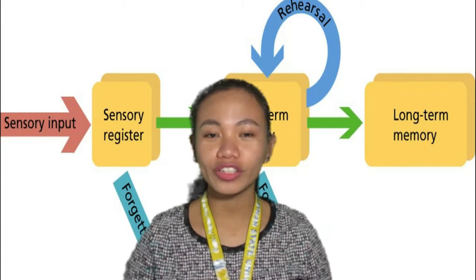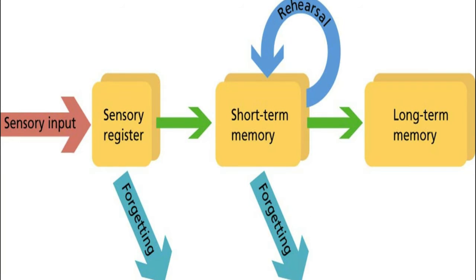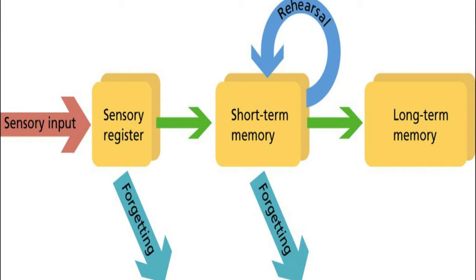The Role of Our Short-Term or Working Memory: Information is filtered from our sensory memory into our short-term or working memory. From there, we process the information further. Some of the information we hold in our short-term memory is discarded or filtered away once again, and a portion of it is encoded or stored in our long-term memory. A number of factors impact how we process things in our working memory, including our individual cognitive abilities, the amount of information we're being asked to remember, how focused we're able to be on a given day, and how much of our attention we give to the information.